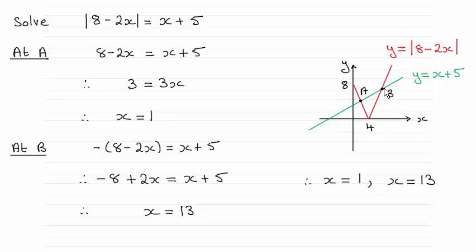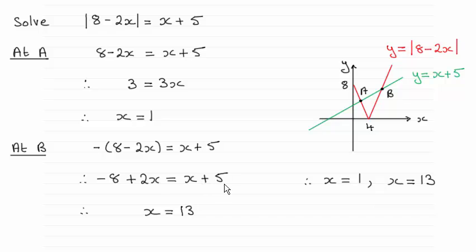And then at point b, we're just looking at this part of the graph, which is the straight line where we just put a negative in front of what we've got in the mod sign. And that gives us minus 8 plus 2x. So this line, if projected, would cross the y-axis at minus 8, and it's got a positive gradient of 2. So you just negate what you've got inside the mod sign. That gives you this equation where we equate it to x plus 5. Solving it gives you x equals 13. So that's the way that we get our two solutions.